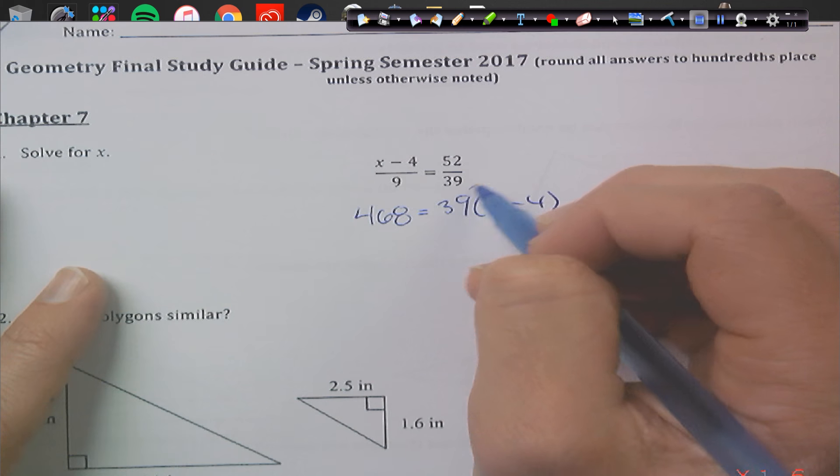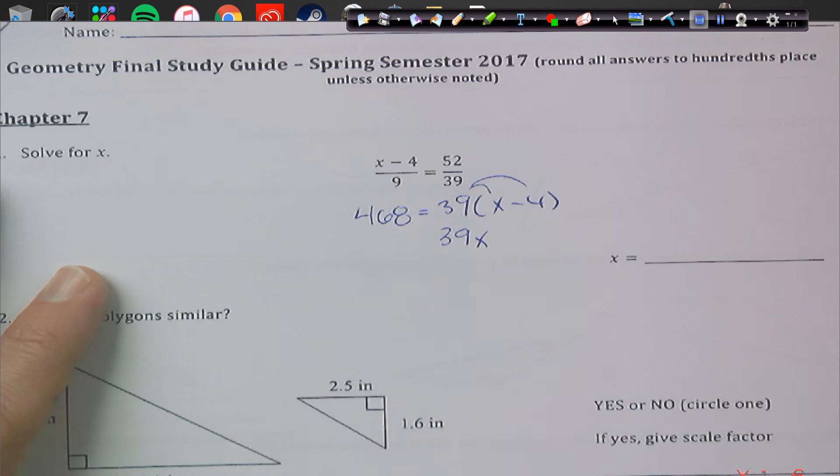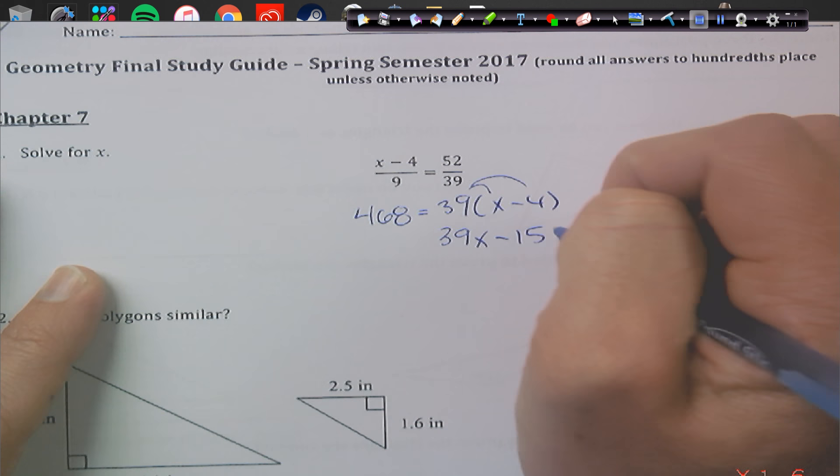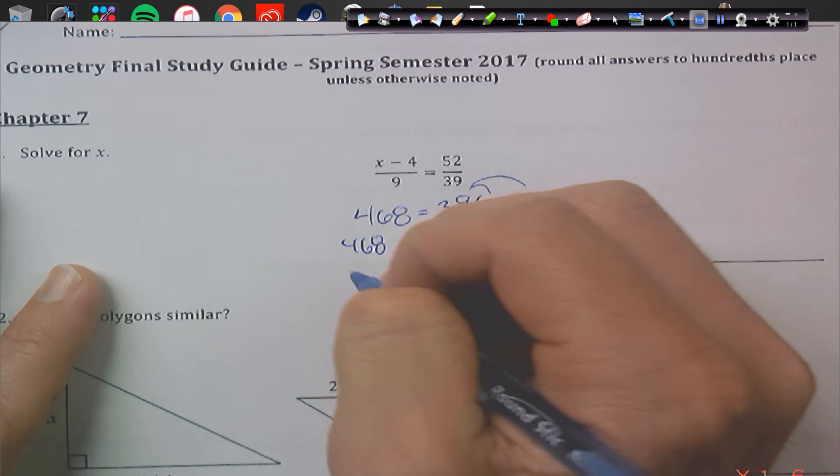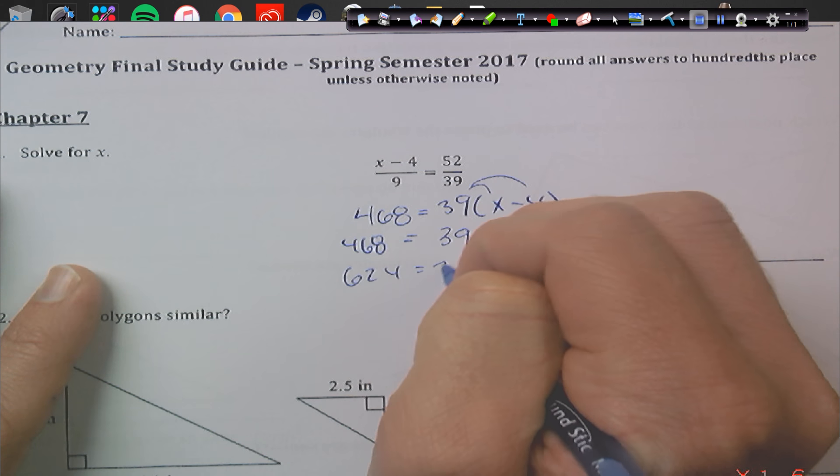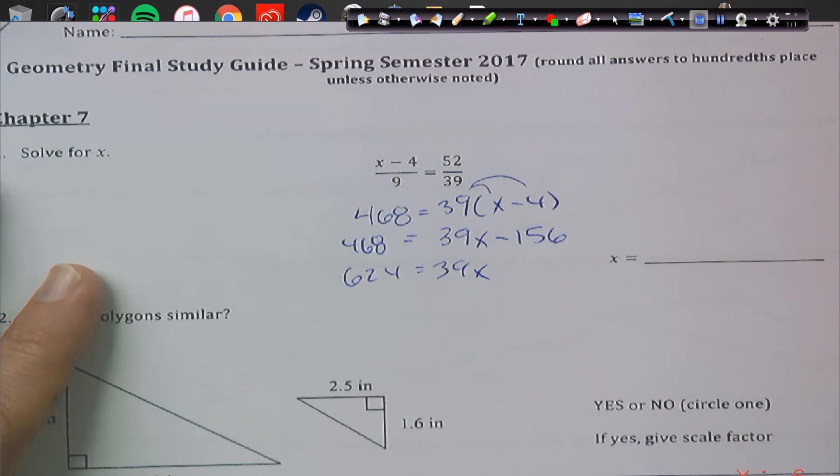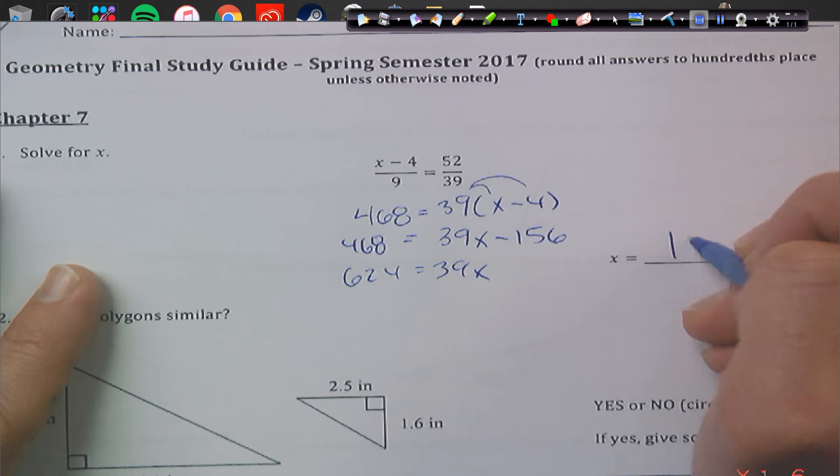Here we go. We have to distribute this, we get 39x, and then we're going to do 39 times 4, because that's minus 156. So this is just a two-step equation at this point. We're going to add the 156 over. And we get 624 equals 39x, divide by 39, and we're going to get x equals 16.